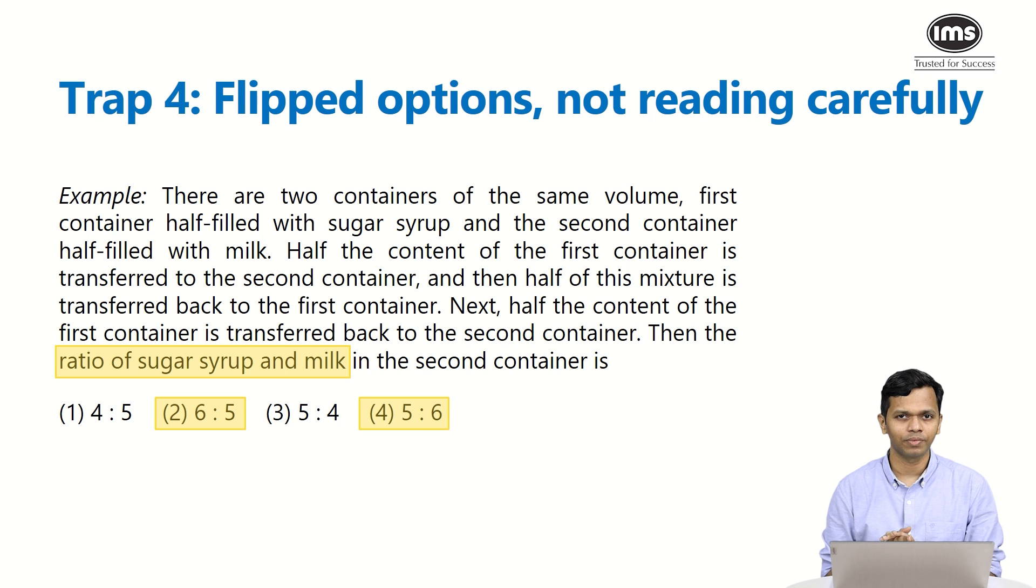Moving forward, let's talk about the fourth trap, and this is the most commonly seen trap, which is flipped options and the other side of it could be not reading carefully as well. For example, in this particular question that you see, there are two containers of the same volume and there's some transfer that is happening from first to second, then second to first, and then first to second. So it's a very simple question based on mixtures, but now if you look at the end part of the question, it says the ratio of sugar syrup and milk in the second container.